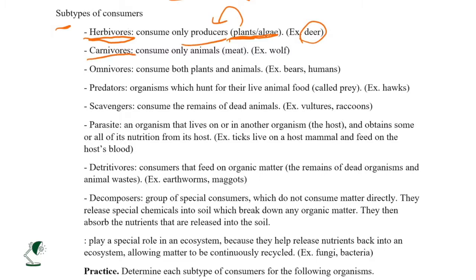Carnivores consume only animals. Examples include wolves and lions. Omnivores, unlike herbivores and carnivores, consume both plants and animals. For example, humans eat plants and meat, so we are omnivores. Bears also eat fruits, plants, and meat, making them omnivores too.